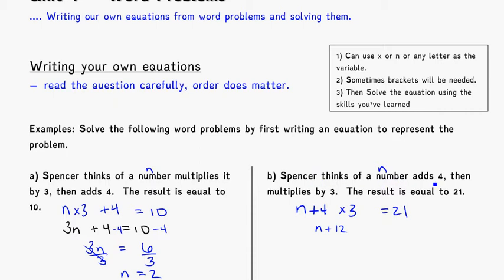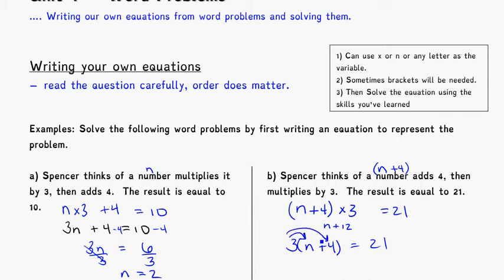Spencer thinks of a number and adds 4, so N plus 4. Then he multiplies by 3, so that N plus 4 needs to go into brackets — otherwise the problem is different. Without brackets we'd get N plus 12, but with brackets, the correct form is 3(N plus 4). Expanding this out, we get 3N plus 12 is equal to 21, not N plus 12 is equal to 21. Those brackets are very important — they change the problem entirely.